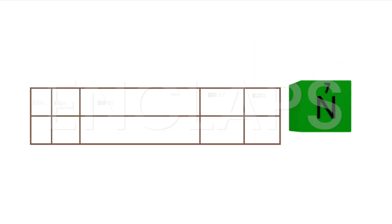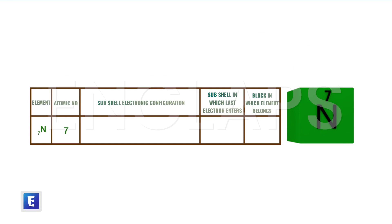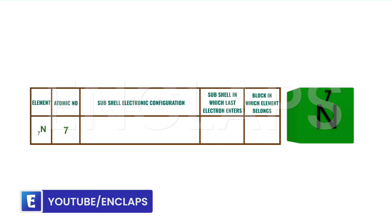Now consider the case of nitrogen. Nitrogen has its atomic number 7, so its subshell electronic configuration can be written as 1s2, 2s2, 2p3. Here you can see that the last electron enters the P subshell. That means nitrogen belongs to P block in the periodic table.